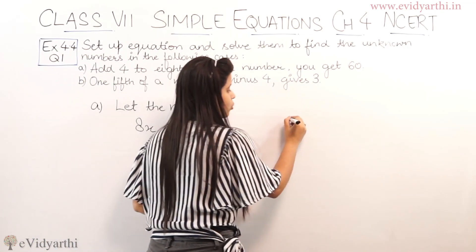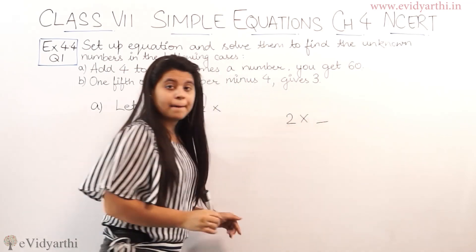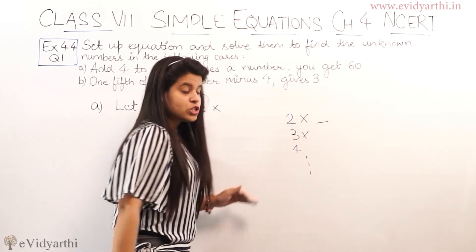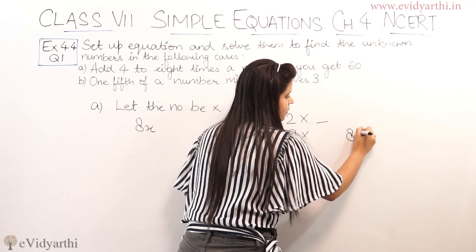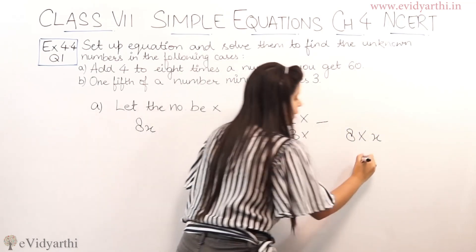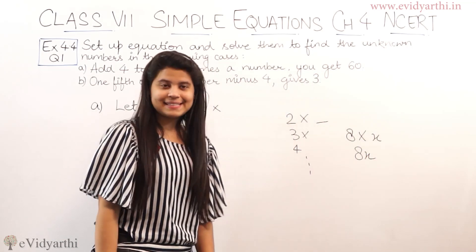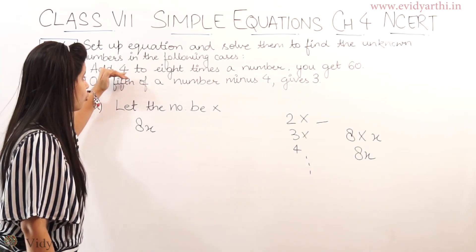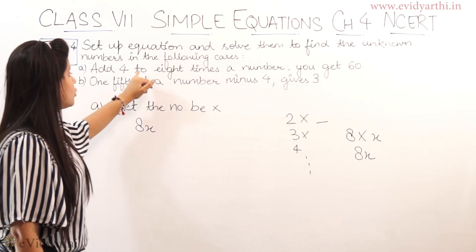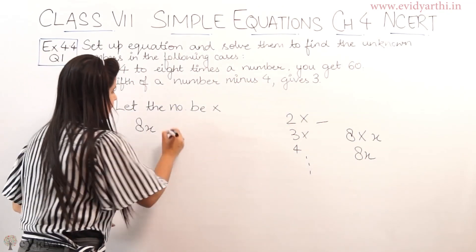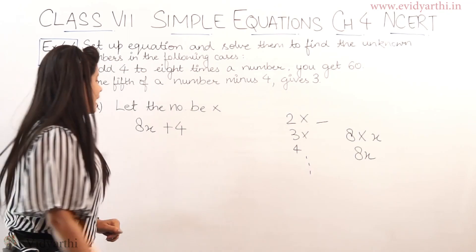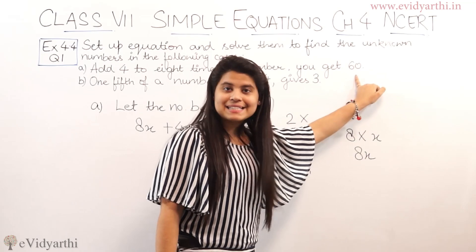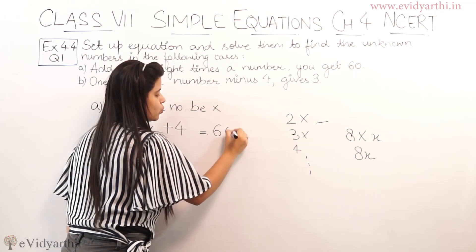So 8x — how? If I say 2 times, it means multiplying something by 2. So if it is 8 times of x, then it means 8 into x, which is 8x. Now here we have to add 4, so 8 times of a number, and in that I have to add 4. So you get — what do you get? 60. So the equation is 8x + 4 = 60.